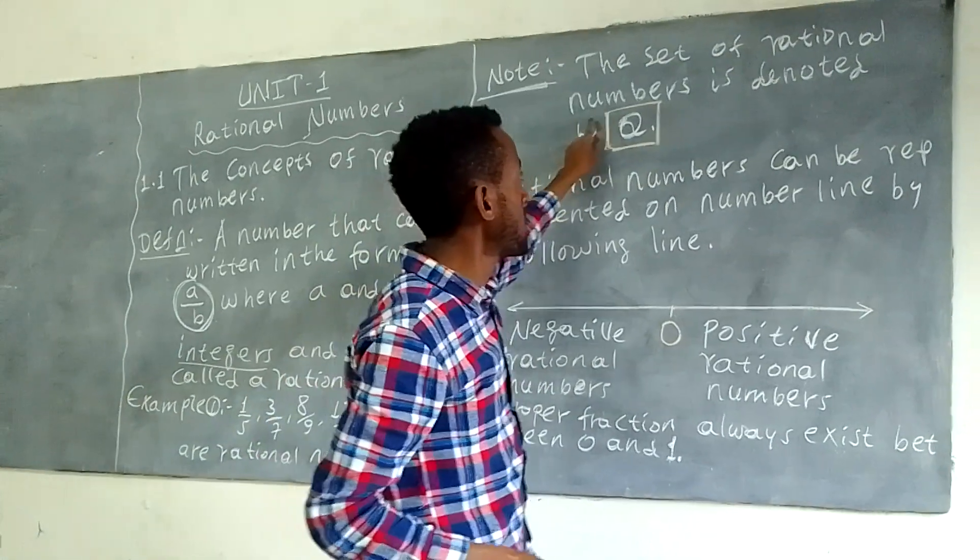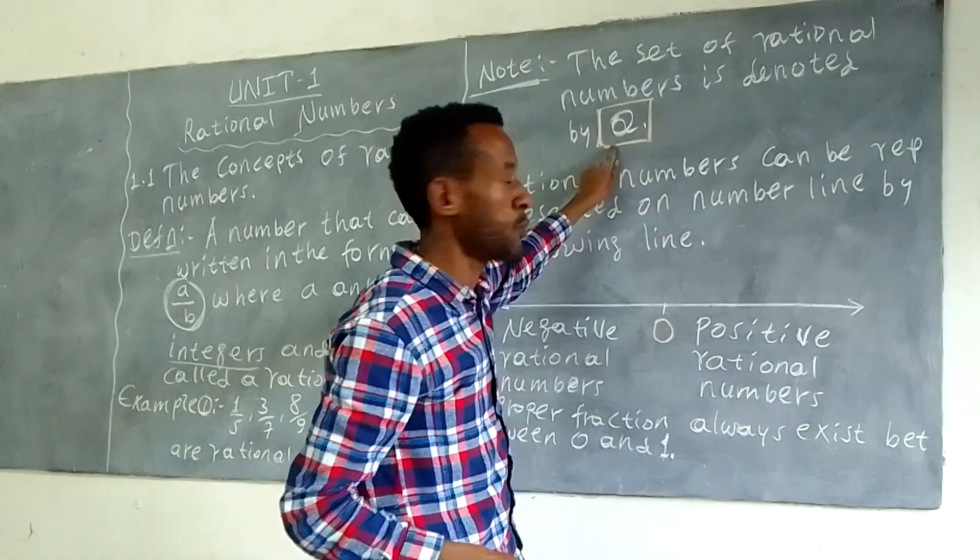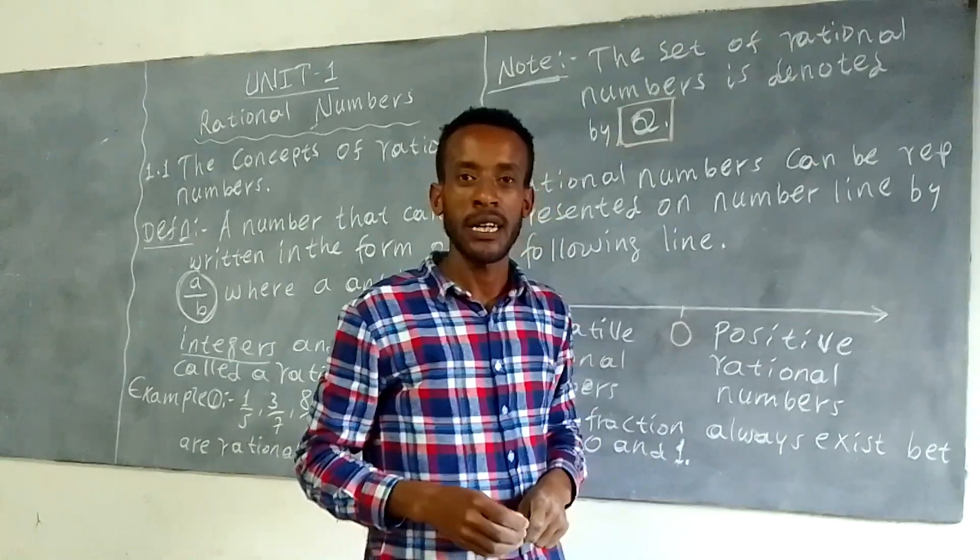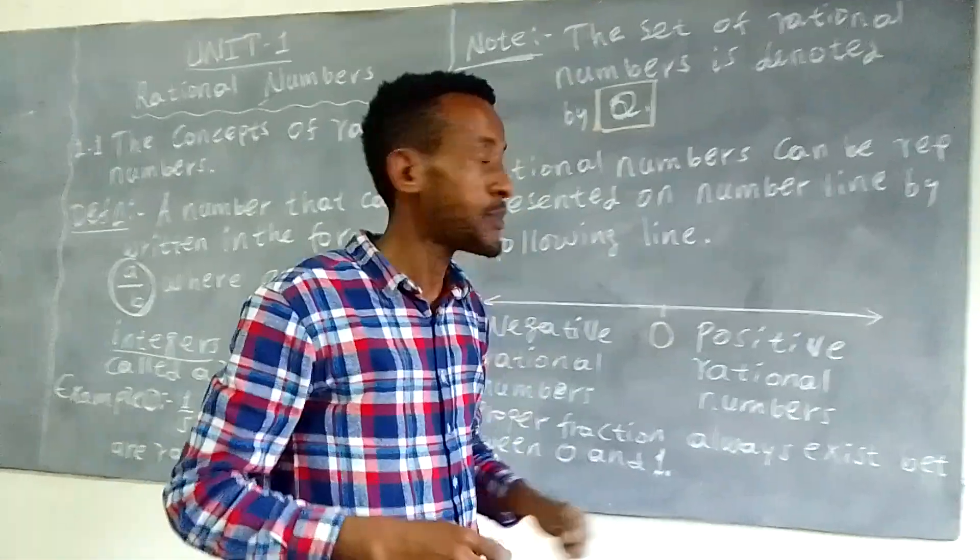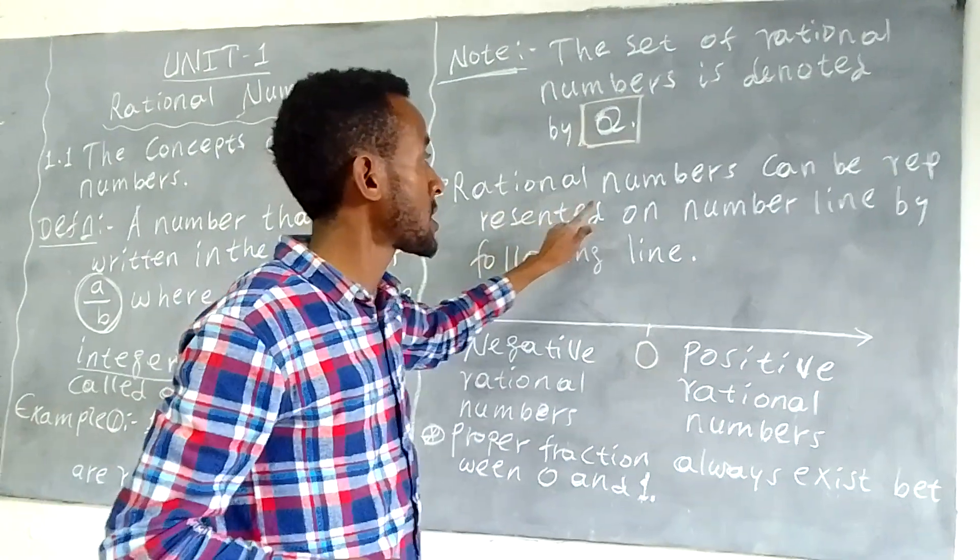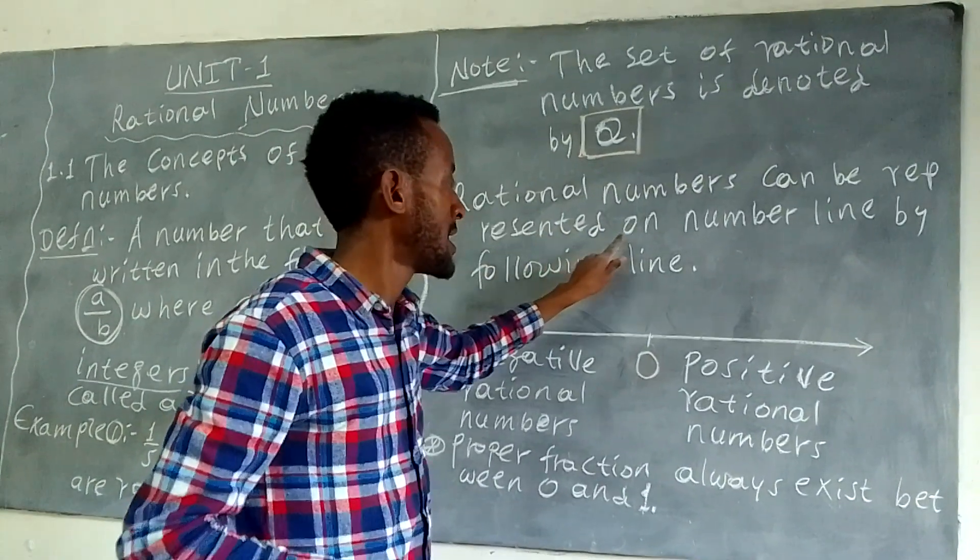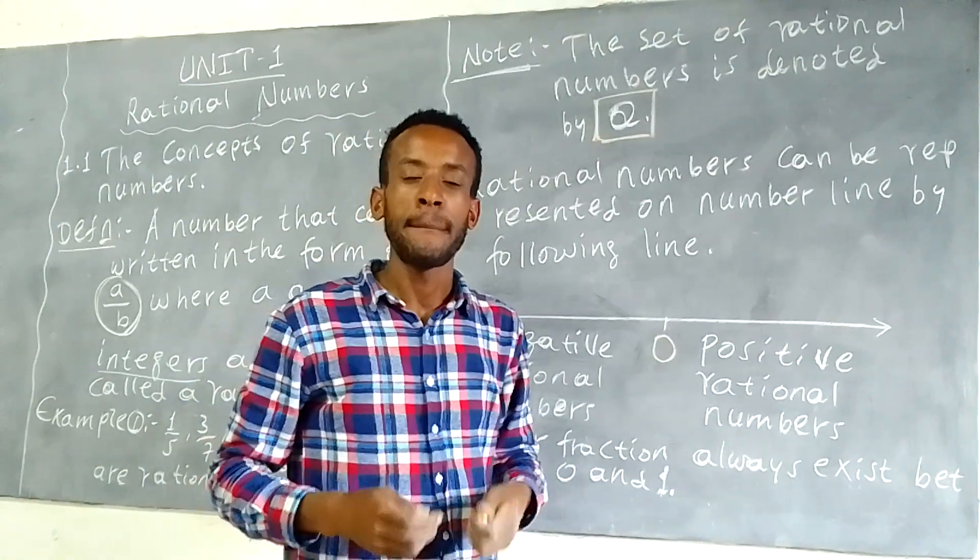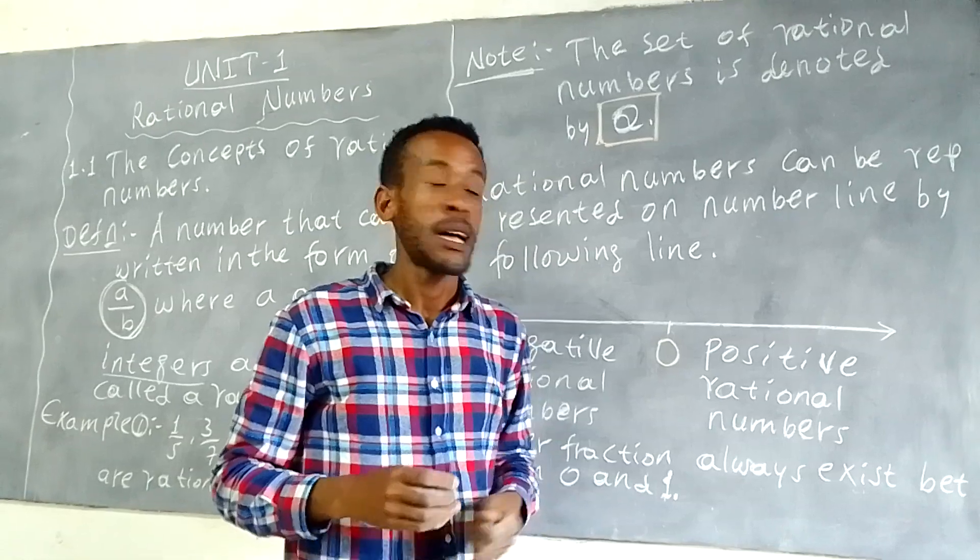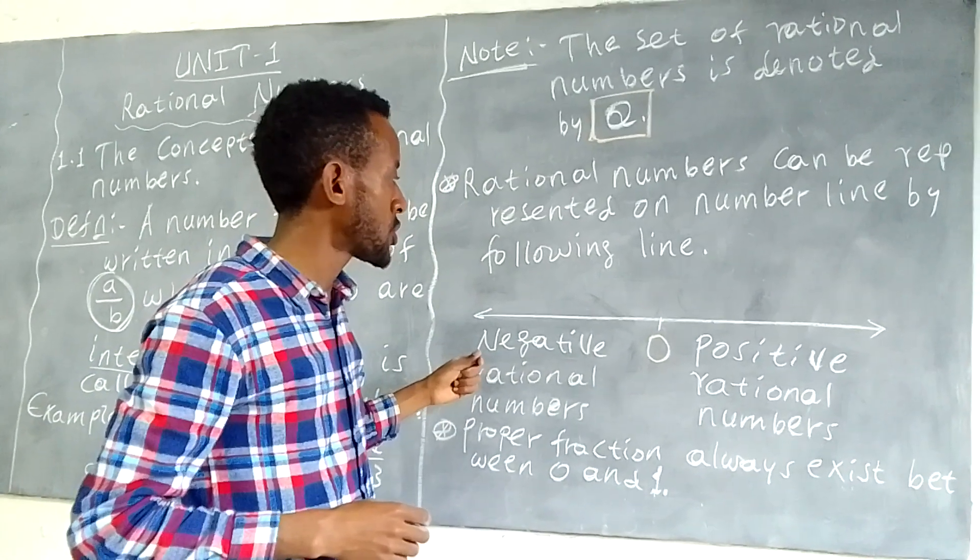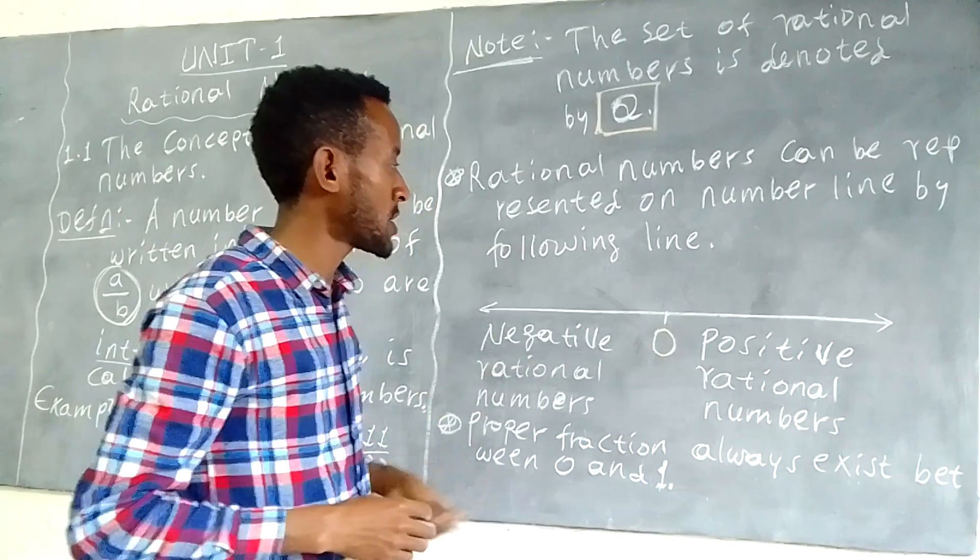Rational numbers can be represented on a number line by the following line. We can use the number line to show or represent rational numbers.